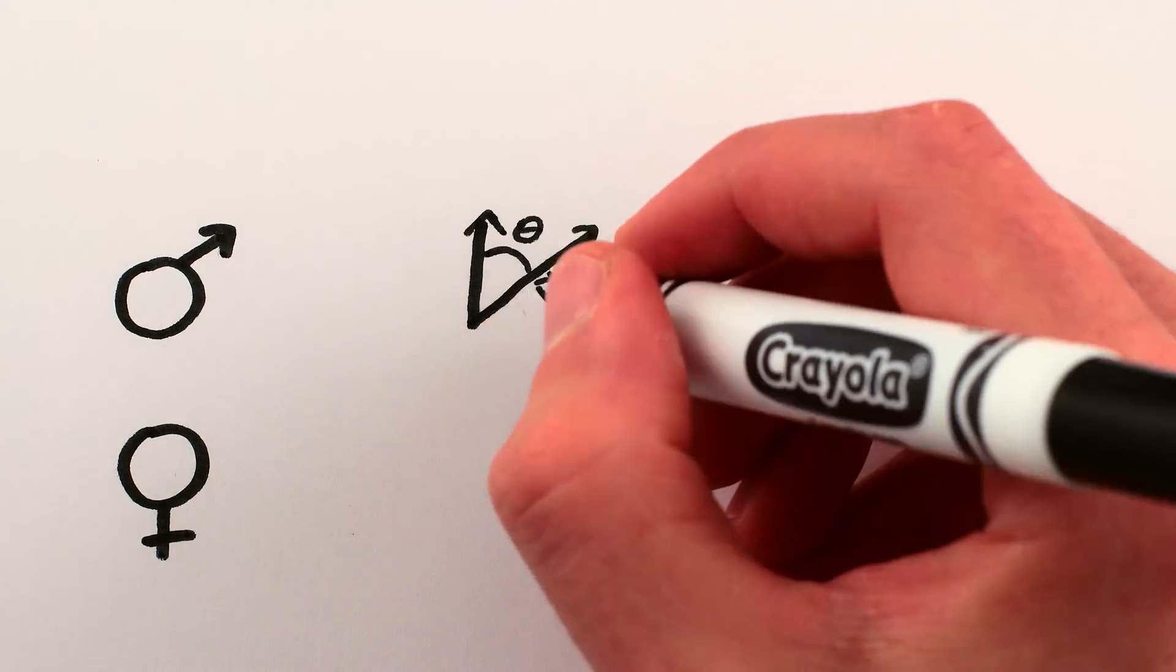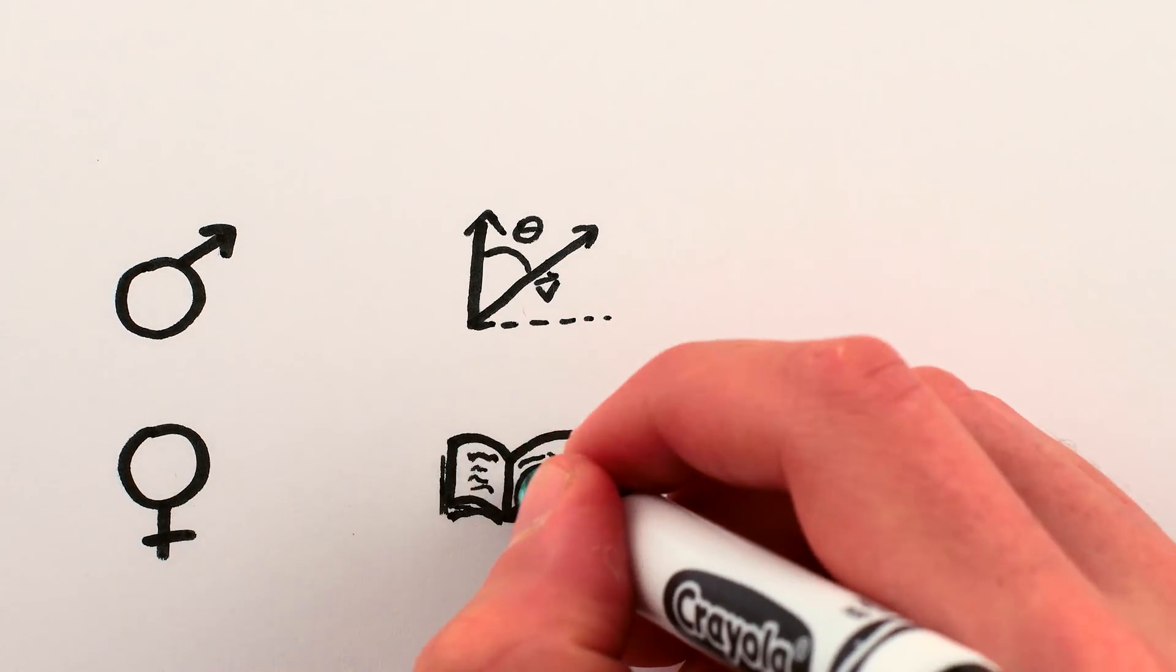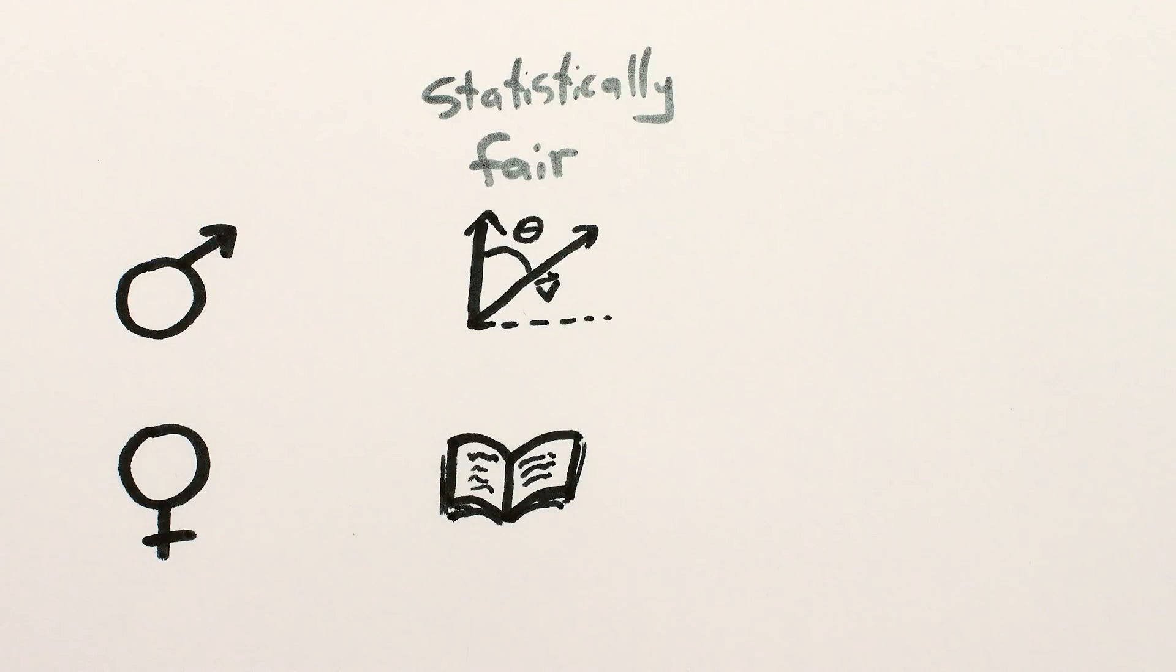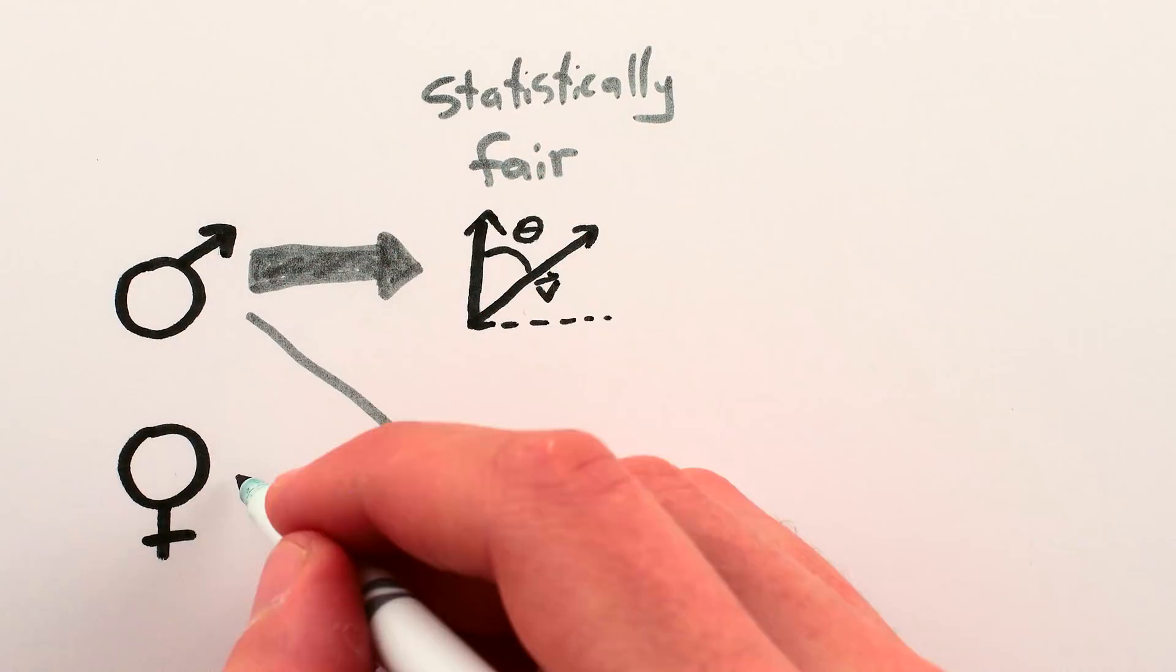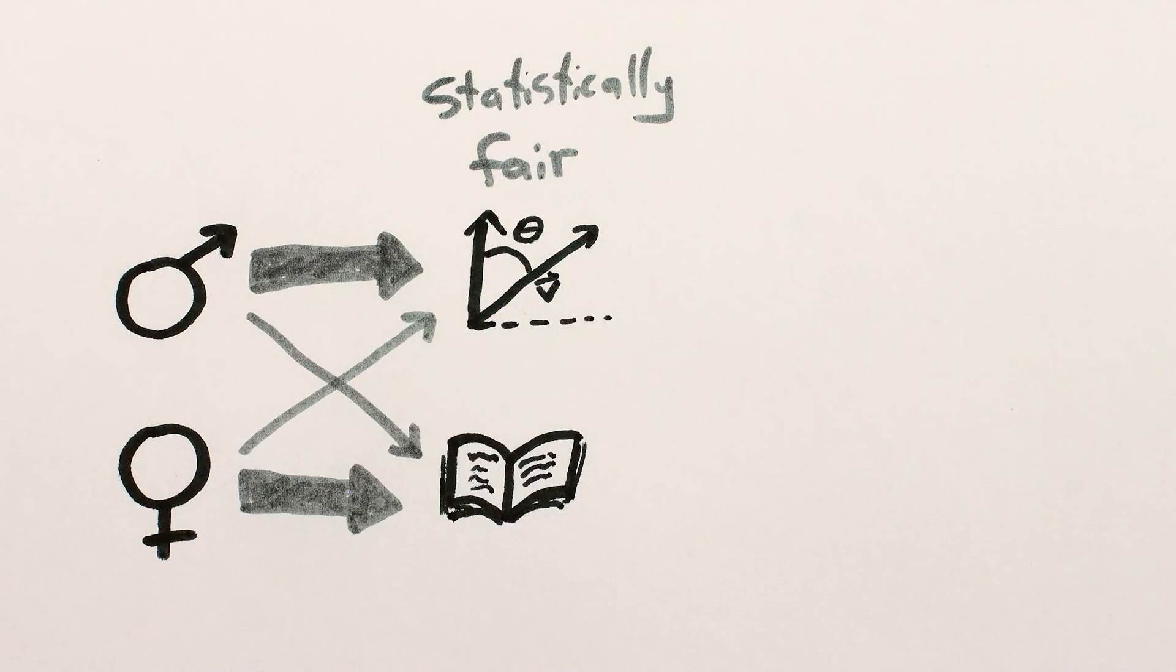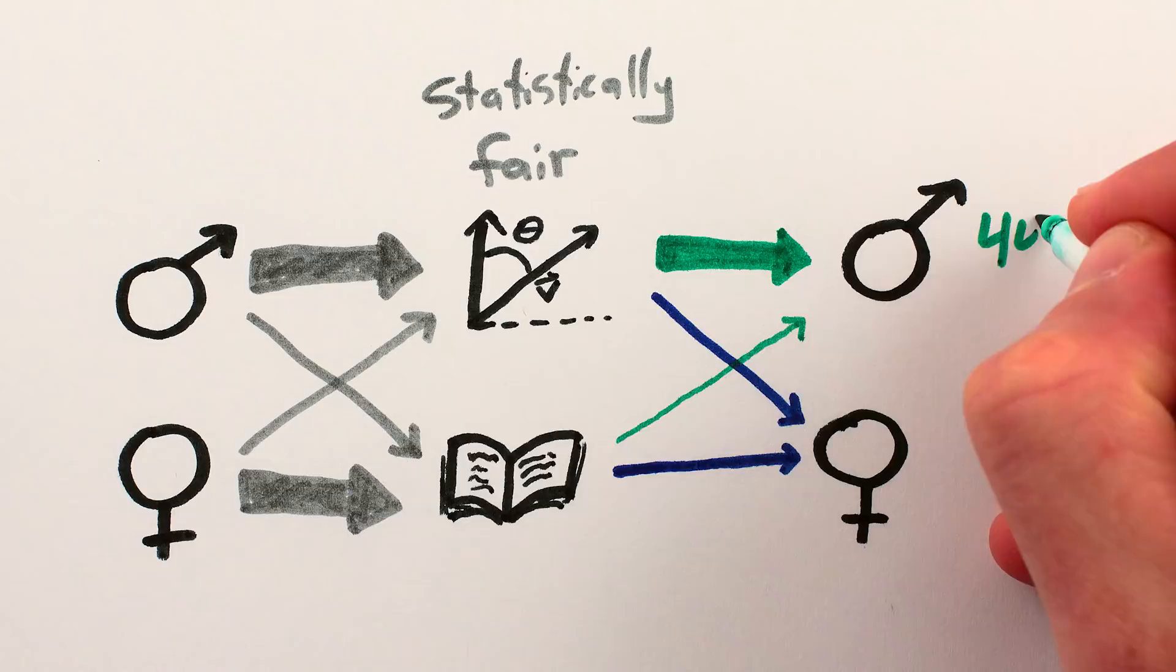Thus, within each department, which was the level at which applications were evaluated, there wasn't obvious evidence of gender discrimination among applicants. If anything, women were favored, and yet the unequal distribution of women and men across departments resulted in an unequal distribution of women and men at the university overall.